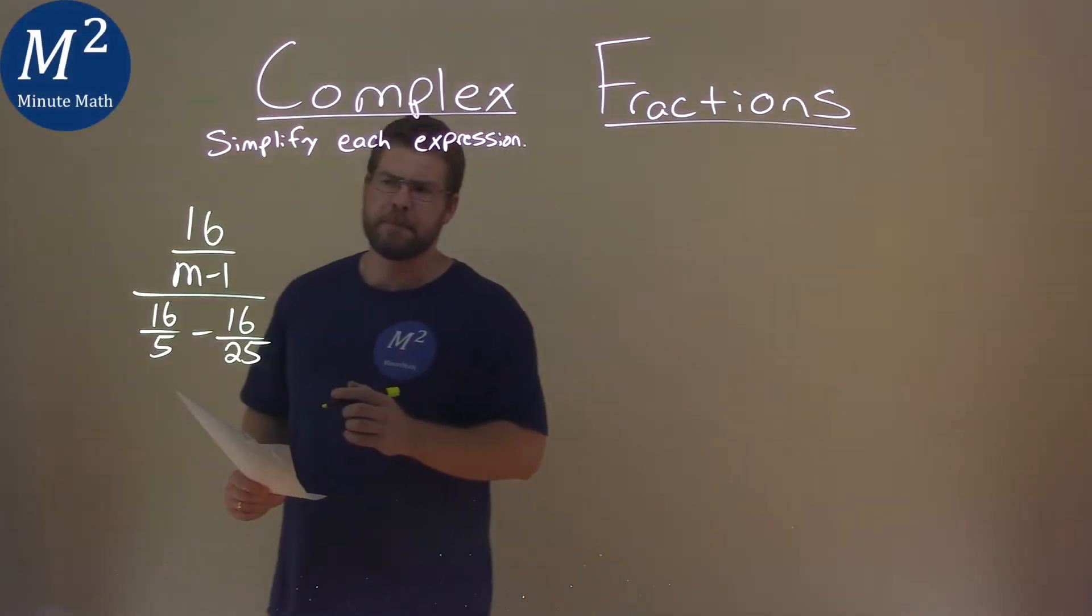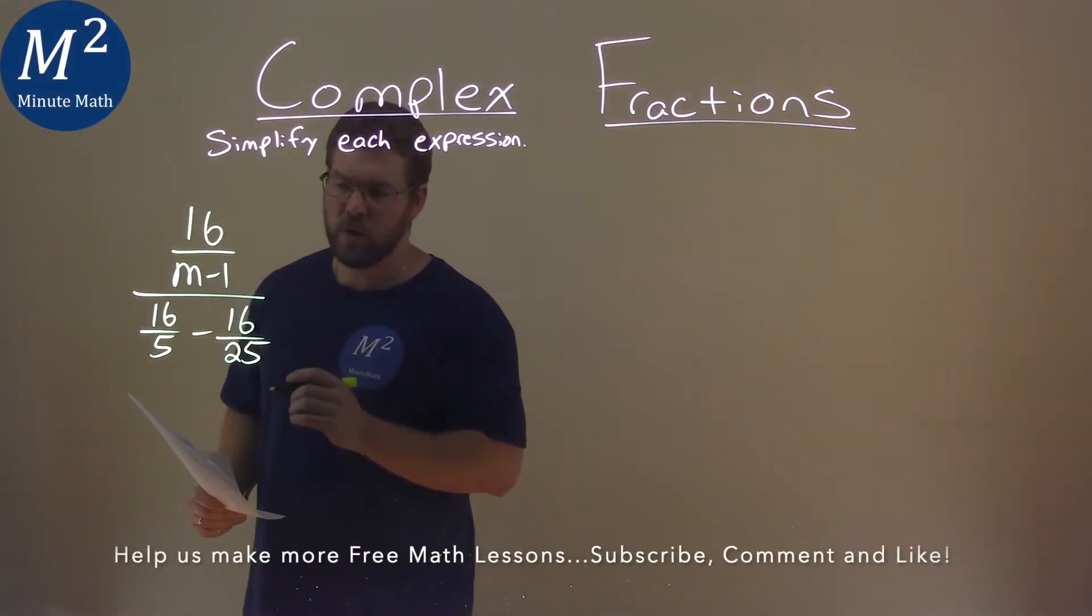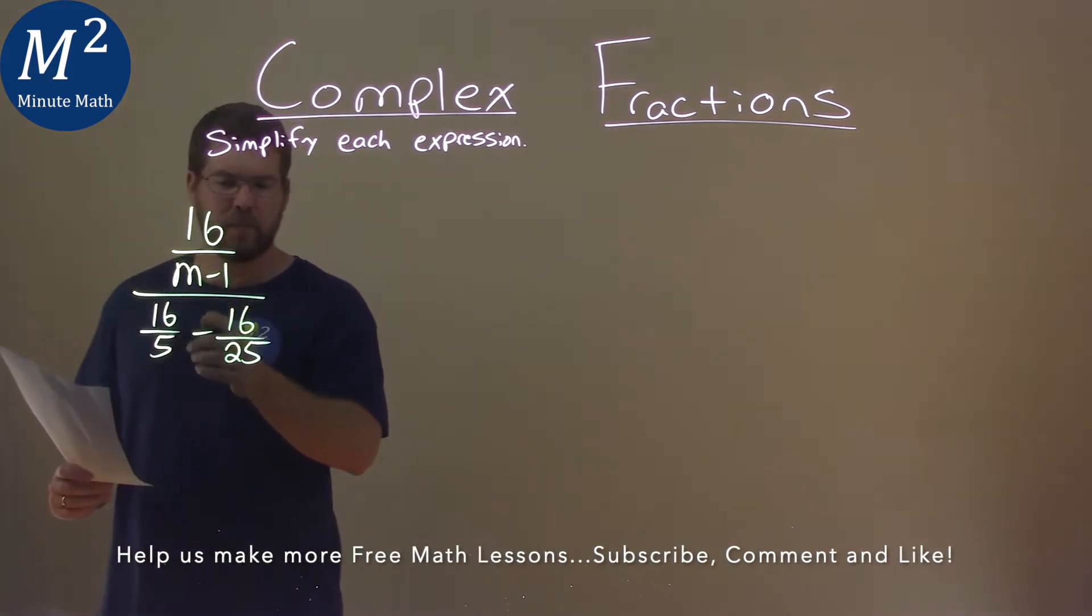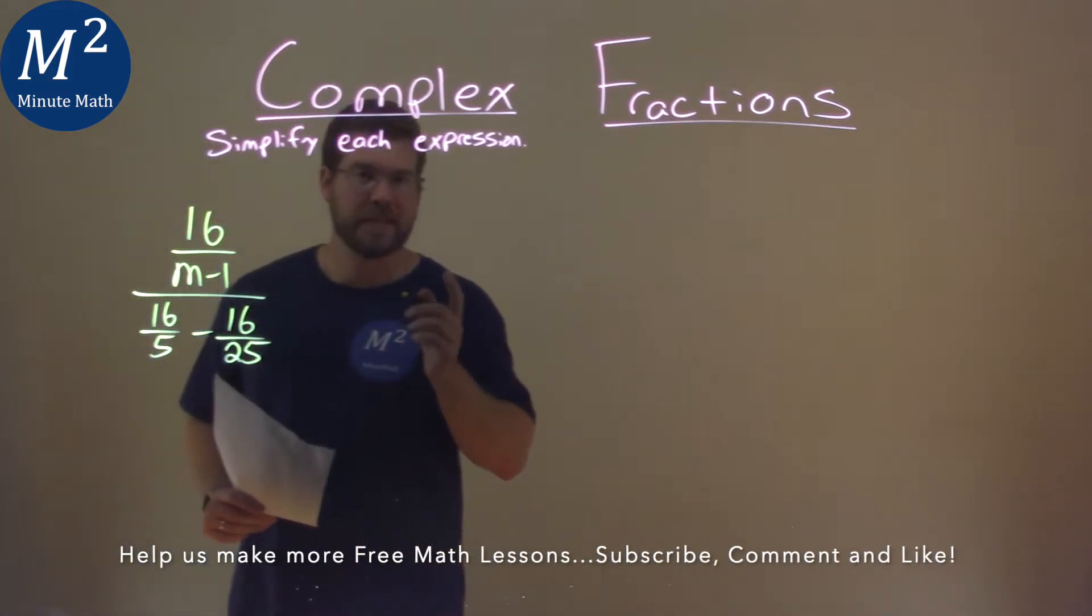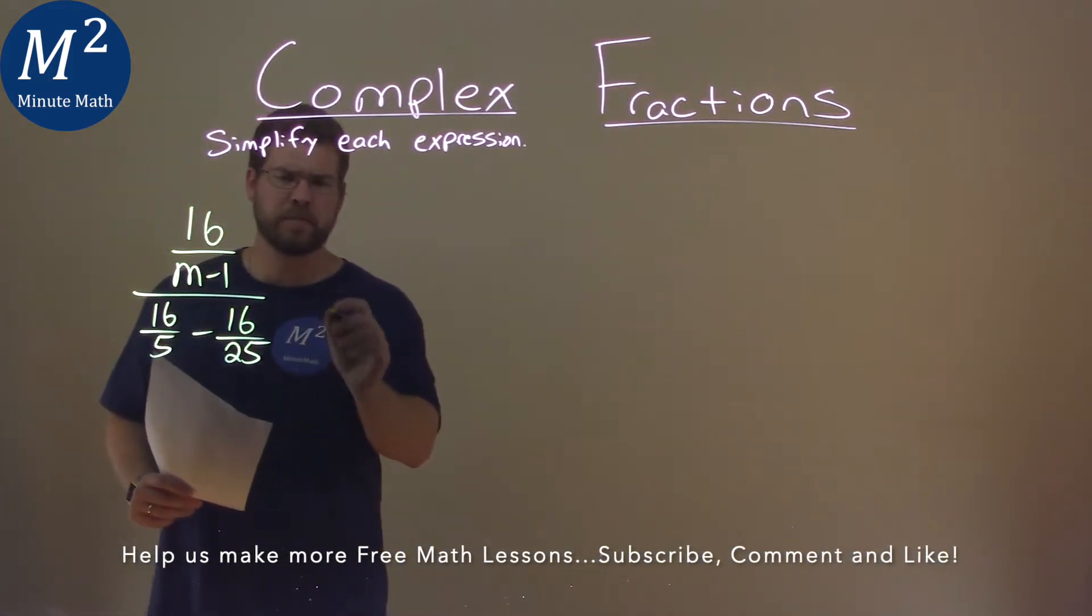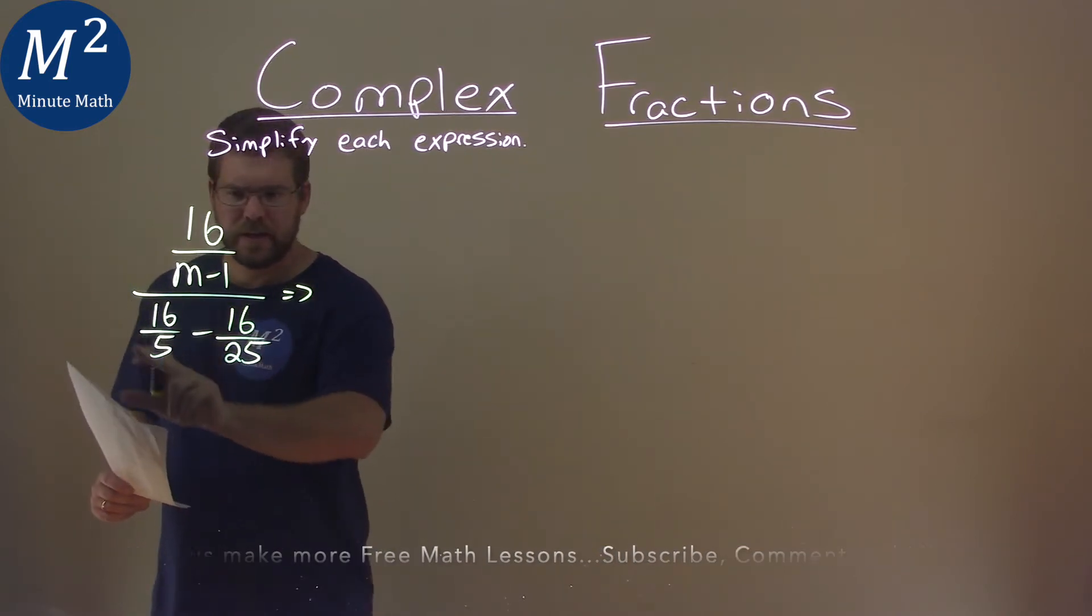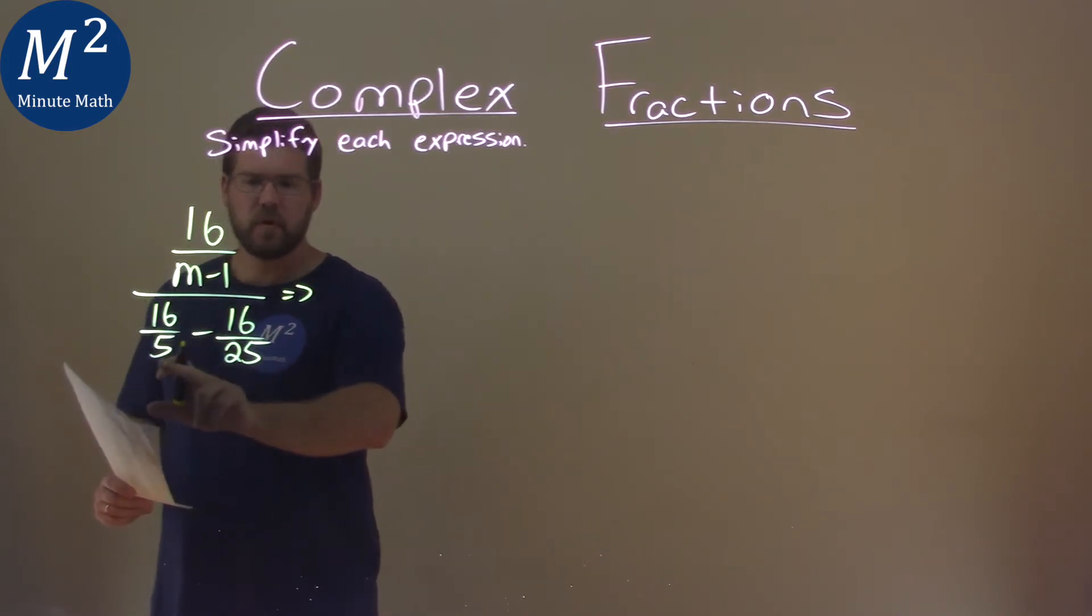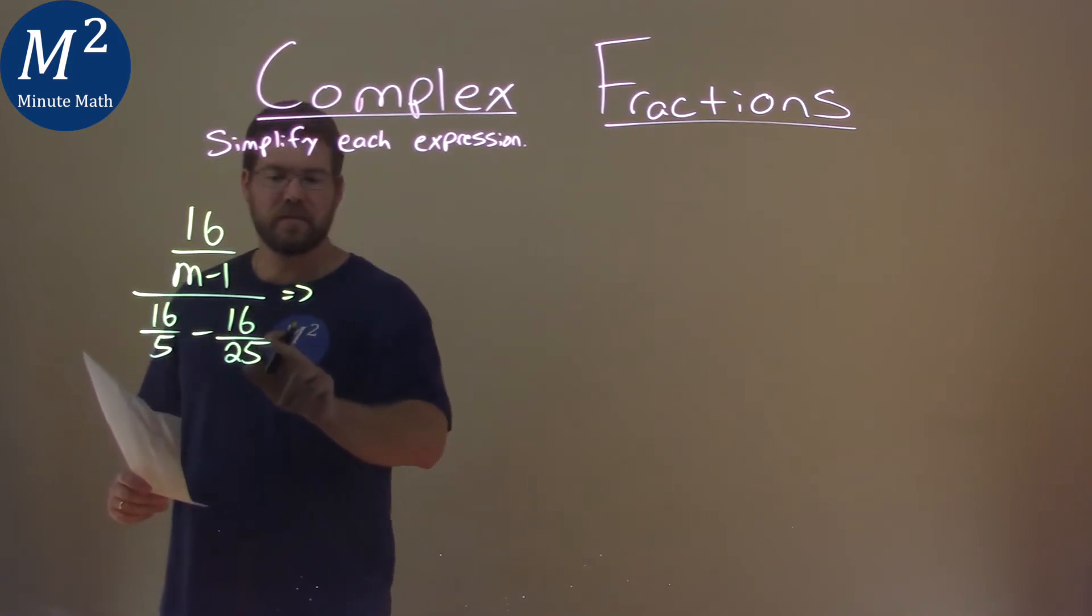We're given this problem right here: 16 over m minus 1, over 16 over 5 minus 16 over 25, and we need to simplify this expression. The first thing I'm going to look at is down in this big denominator. Let's go find a common denominator between the 16 over 5 and the 16 over 25.